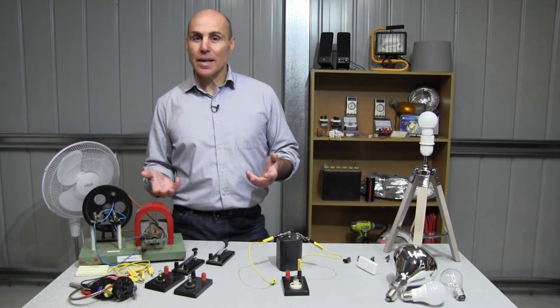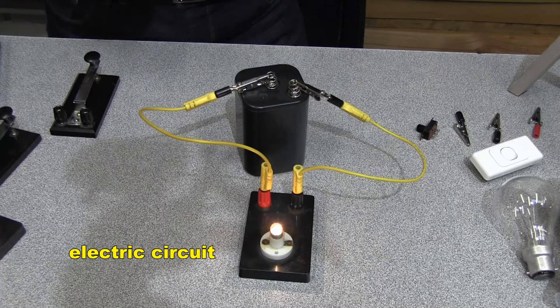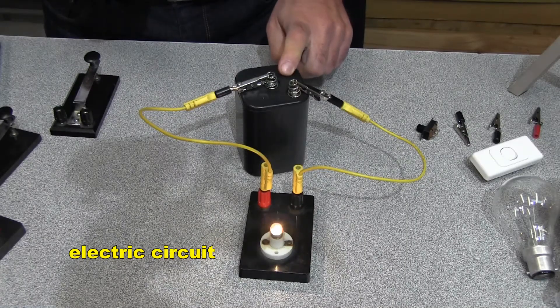Electrical devices are always connected in what is called an electric circuit. The electric current has to be allowed to flow out of, in this case, the battery.